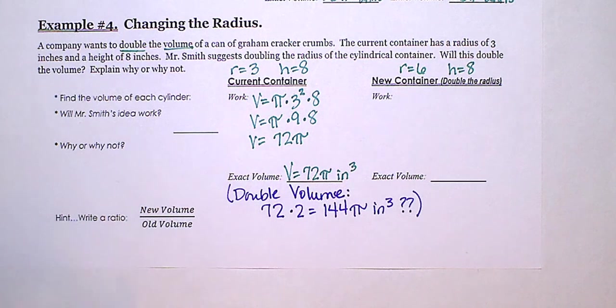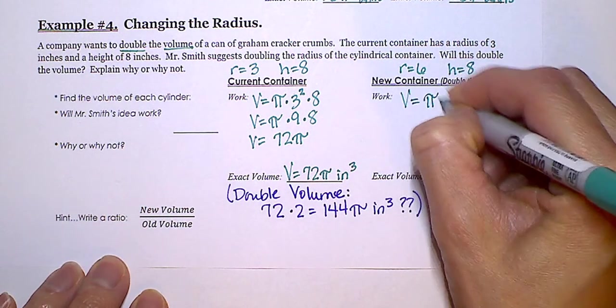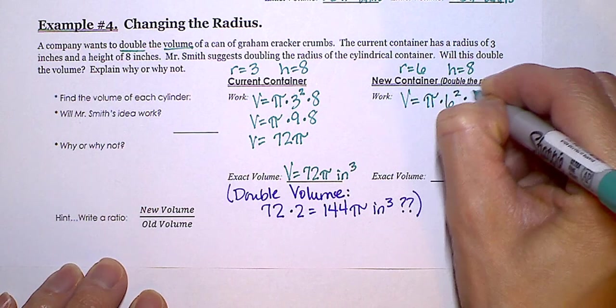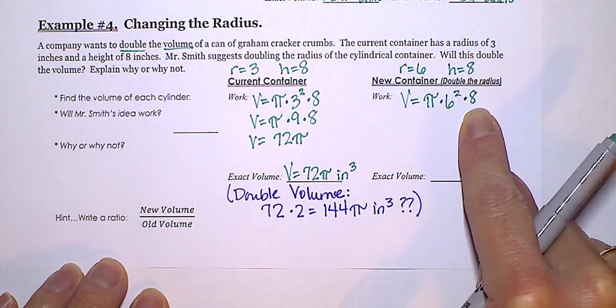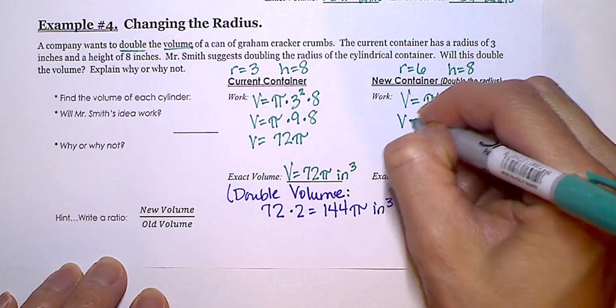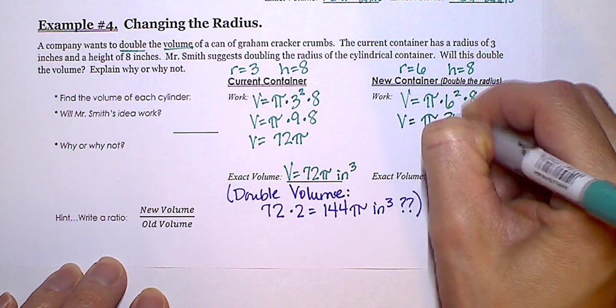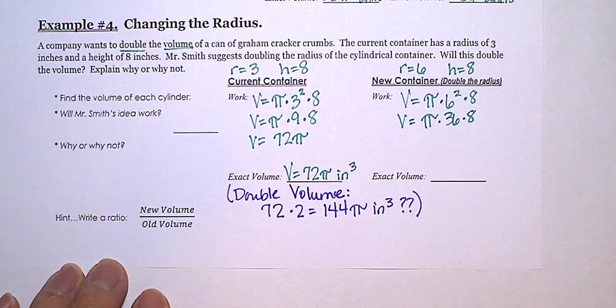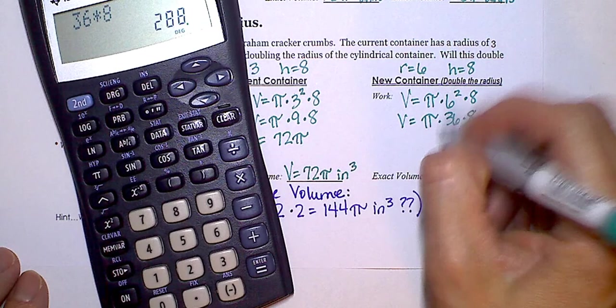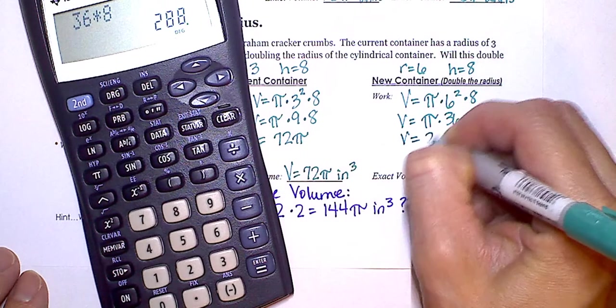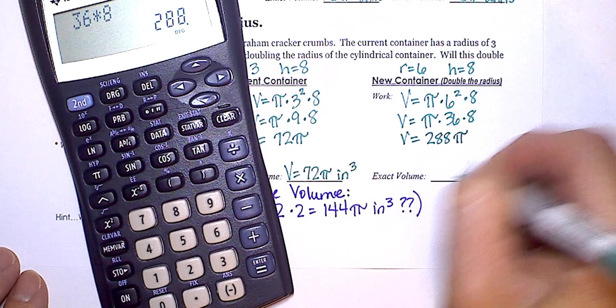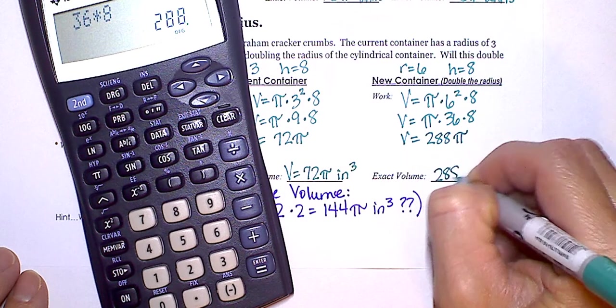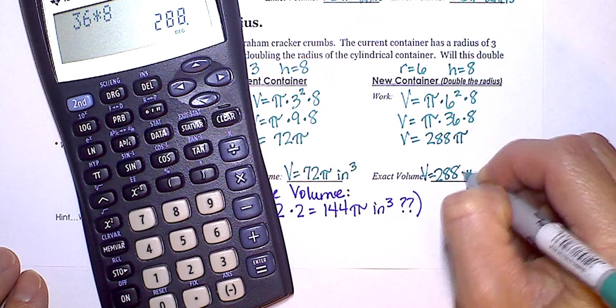So V equals pi times 6 squared times 8. So radius squared times the height. 6 squared is 36. And then I need to do 36 times 8. So 36 times 8, volume is 288 pi inches cubic.